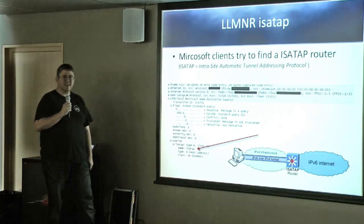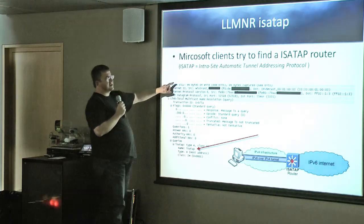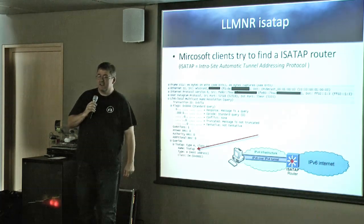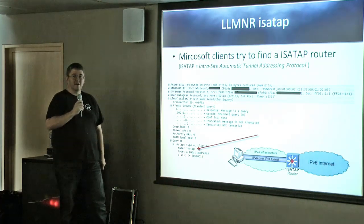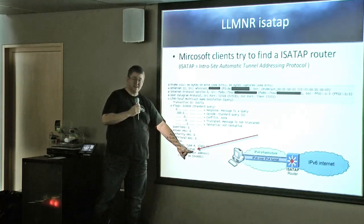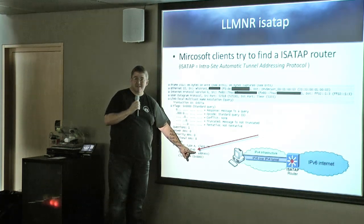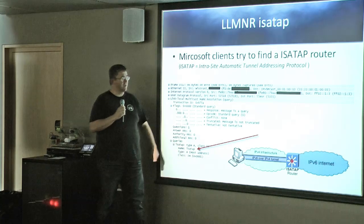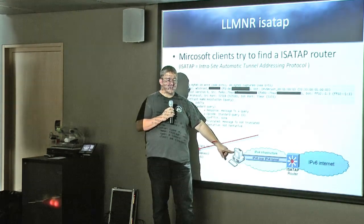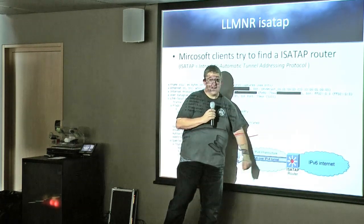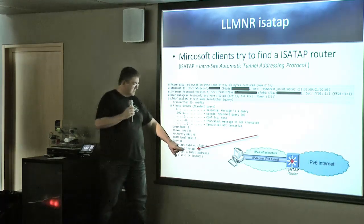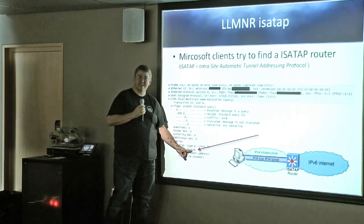Microsoft also has a protocol called ISATAP — the Intra-Site Automatic Tunnel Addressing Protocol. When Windows 7 starts up with no valid IPv6 address, it tries to connect to an ISATAP router by sending a DNS request for the name 'ISATAP'. A bad actor can respond claiming their device is the ISATAP router, send back an IPv4 address, and then the client creates an IPv6-over-IPv4 tunnel to that device, routing all IPv6 traffic through the attacker. Just respond to that request and you receive a lot of traffic.